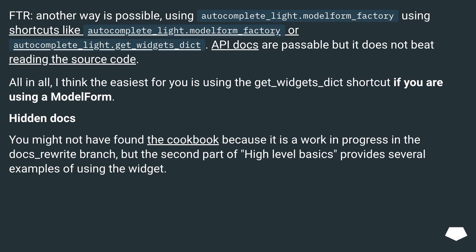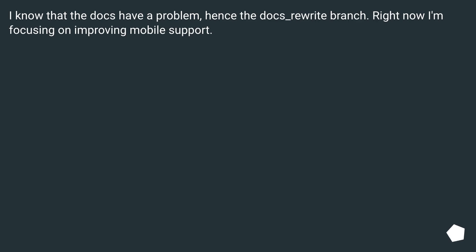All in all, I think the easiest option for you is using the get_widgets_dict shortcut if you are using a ModelForm. You might not have found the cookbook because it is a work in progress in the docs_rewrite branch. But the second part of high-level basics provides several examples of using the widget. I know the docs have a problem — hence the docs_rewrite branch. Right now I'm focusing on improving mobile support.